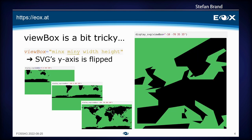I will now show the iterative process it took to get it correct. On the left side there is the whole world, showing the iterative approach to getting everything on the same canvas. On the right side I zoomed to Europe. When you look at the top, the min x is minus 10, which we can find easily because that's the border of Ireland. But the min y is minus 70 — you would assume the lower left corner is 35 because that's the lower border of Europe, but SVG has its y-axis flipped, so you have to go to the upper corner and take the negative: minus 70.